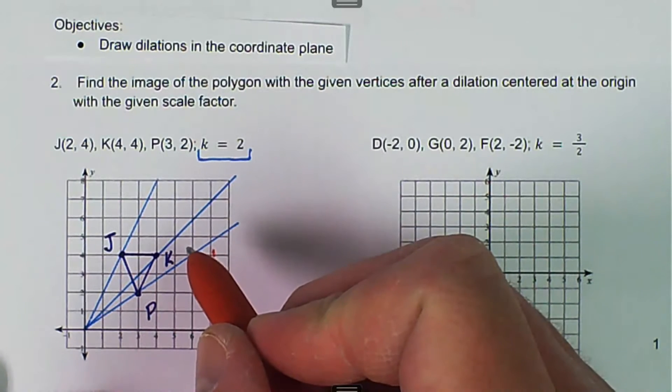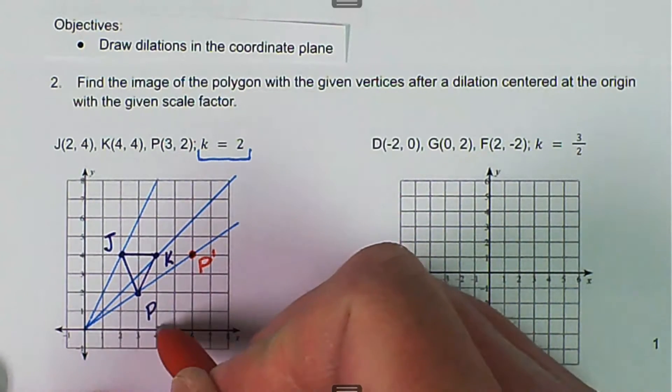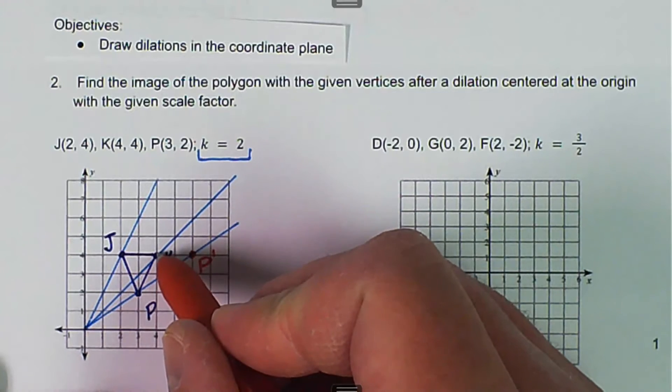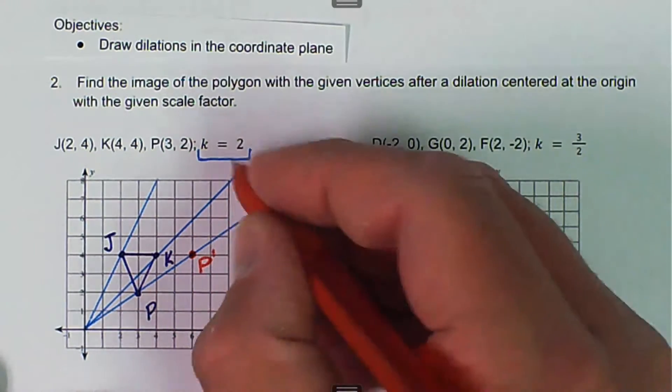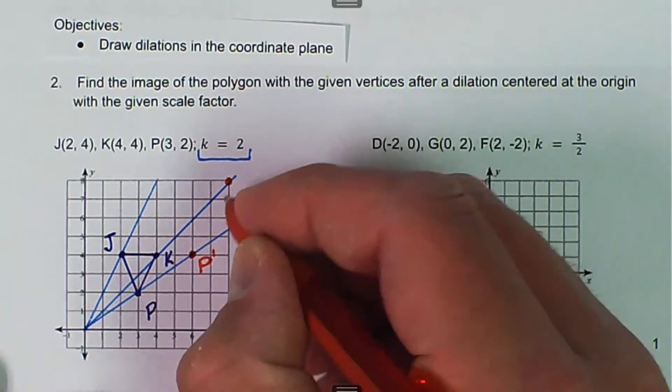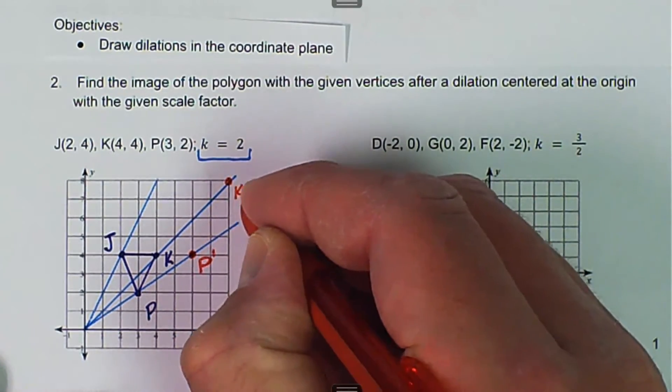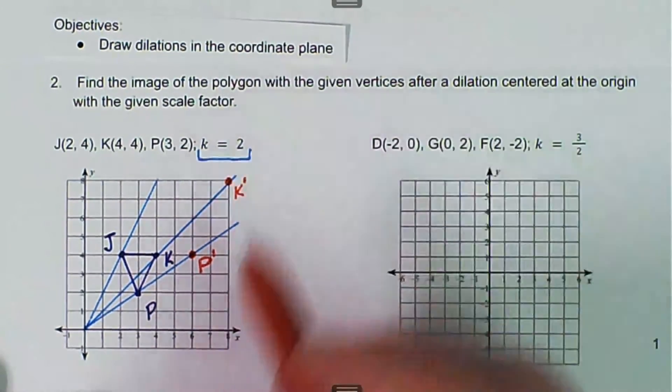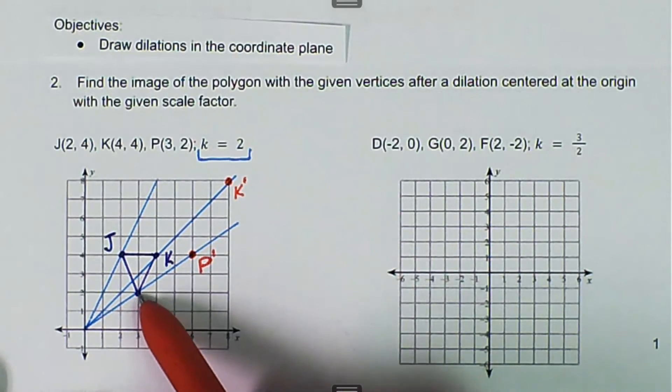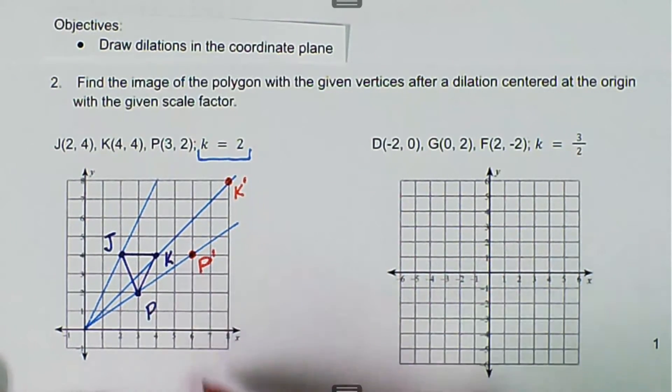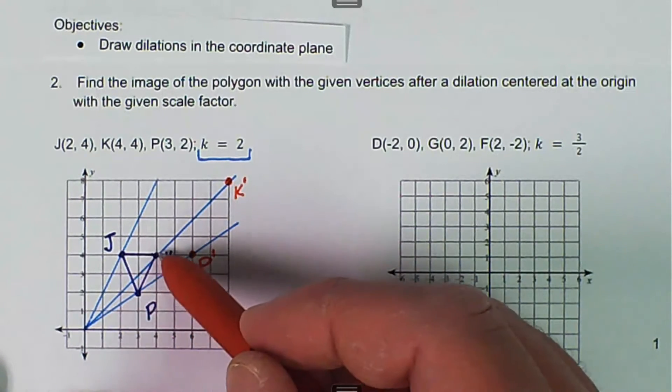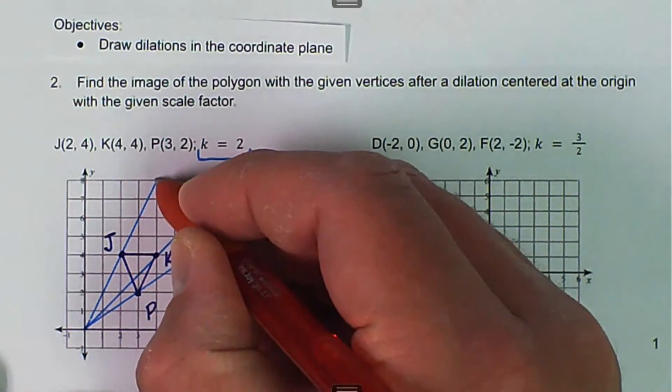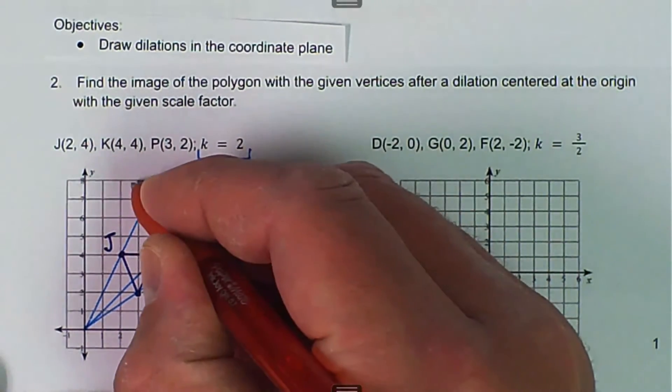And then K, the other thing we can do is we can say, over 4, up 4. So you can do it either way. You can kind of treat it like a slope and count it. That's going to be K prime. Or you can count how to get there, double it, and then just go the full distance. So over 2, up 4, over 2, up 4. And then that's going to be J prime.